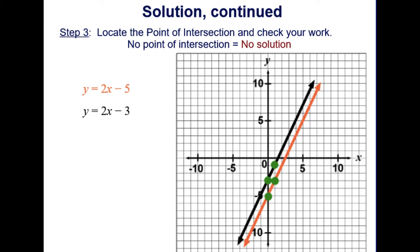So with graphing, you can see easily from slope-intercept form how to graph and then find the point of intersection, or determine that there are infinitely many solutions or no solution at all.